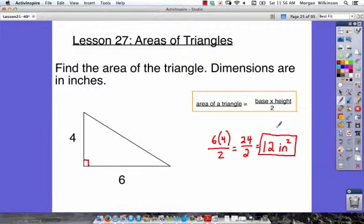We always find the area of a triangle by multiplying base times height and dividing by 2. Let's look at a couple more examples.